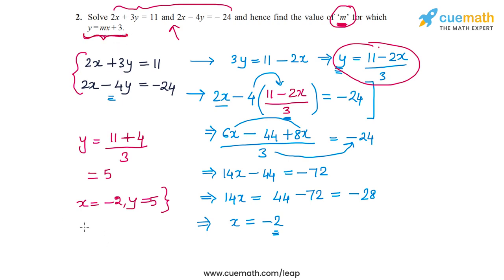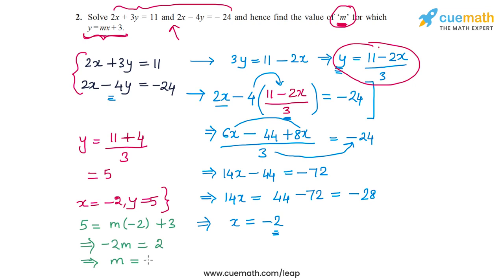Now we find the value of m for which these values satisfy y equal to mx plus 3. Substituting, we get 5 equal to m times minus 2 plus 3, so minus 2m equals 2, and hence m equals 2 divided by minus 2, or minus 1. The value of m is minus 1.